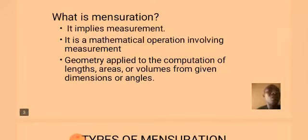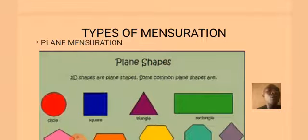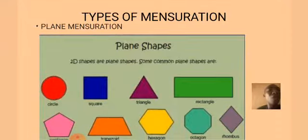What is mensuration? Mensuration implies measurement. It is also a mathematical operation involving measurement. We can also see this as a geometry applied to the computation of lengths, areas or volume from a given dimension or angle. We have two different types of mensuration: plane mensuration and solid mensuration.